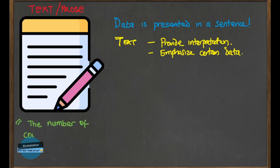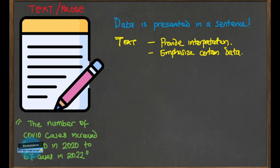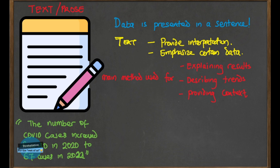An example of text presentation is: the number of COVID cases increased from 40 in 2020 to 67 in 2022. Text presentation is the main method used when you have already done data analysis and you want to explain your results. It is also used to describe trends in data over time, and it is frequently used to provide context to the data by describing some important aspects of it.